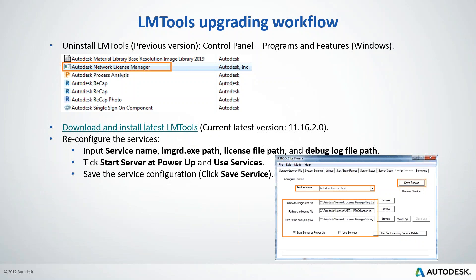Once uninstalled, download and install the latest LMTools version — currently 11.16 — from the Autodesk page. Launch LMTools and reconfigure the service: input the new service name, set the path for LMGRD, specify the license file, and the debug log file. Take note: if you are planning to use 2020 products, make sure you upgrade your license file — you can raise a support request or use the contract admin in your Autodesk account. Then click Start Server, Power Up, and use the services, then Save Service.